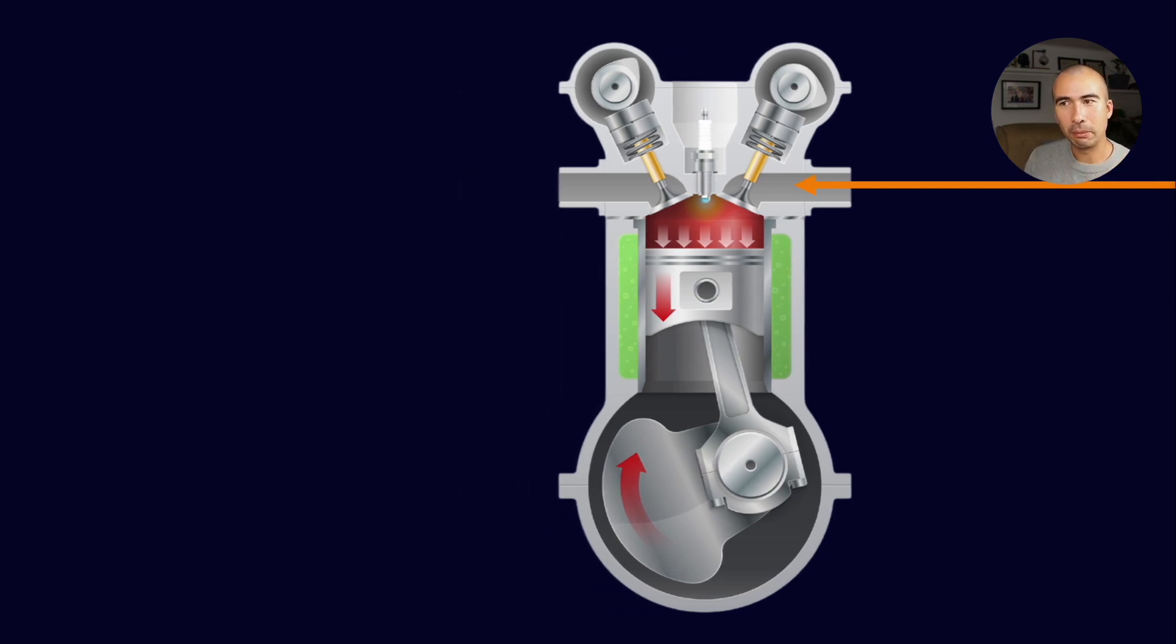Everything basically comes from the combustion chamber. All the exhaust gases have to have originated from that combustion chamber. And what's in that combustion chamber? There's fuel, there's air, and there's oil. And that's pretty much it. So, if we have poisoned a catalyst, one of these three has to be the culprit.